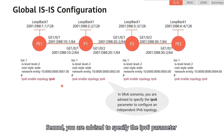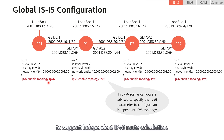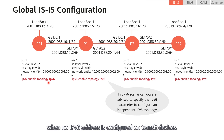You are advised to specify the IPv6 parameter in the IPv6-enabled topology command on an SRV6 network to support independent IPv6 route calculation. This prevents failures in forwarding IPv6 traffic when no IPv6 address is configured on transit devices.